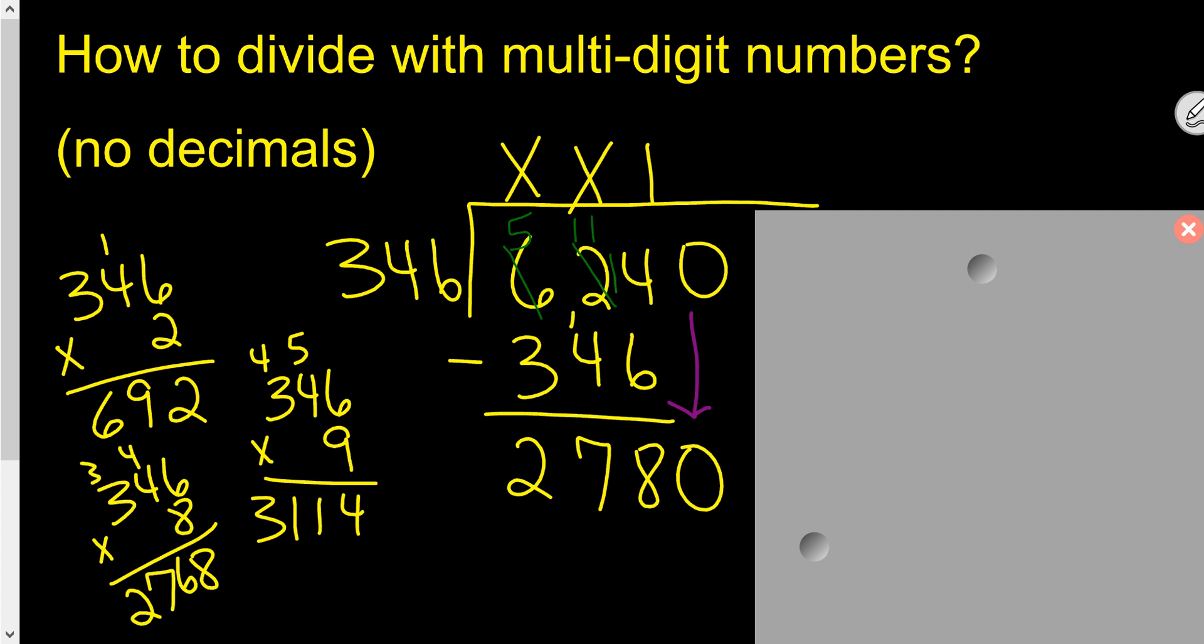And we get 2,768. Yeah, that works. So let's put an eight right over this zero. 346 times eight is 2,768. Can we subtract it?